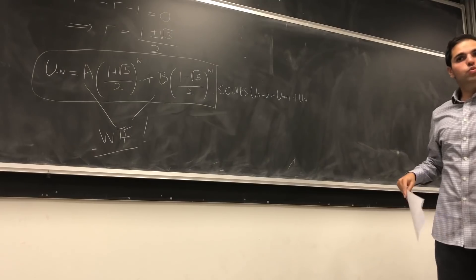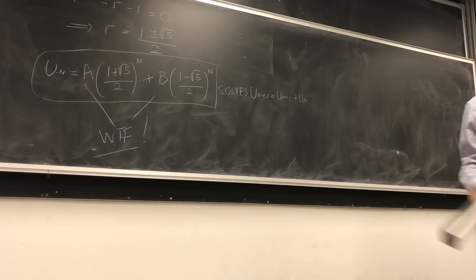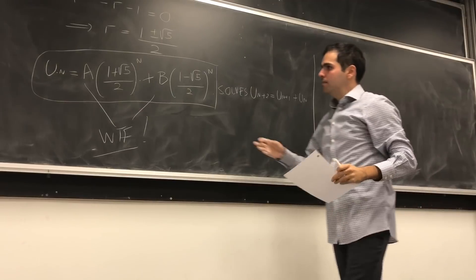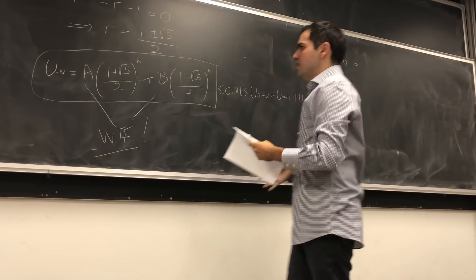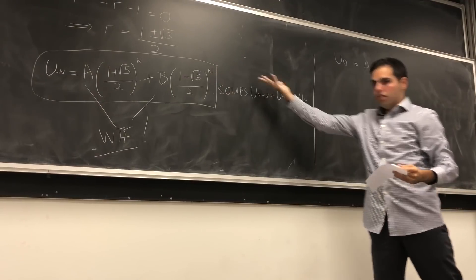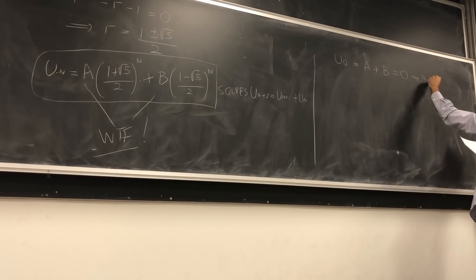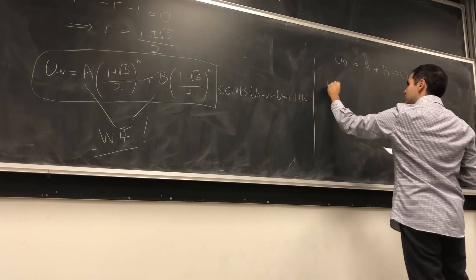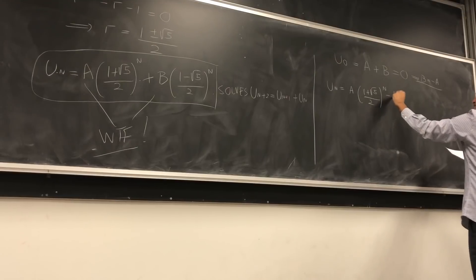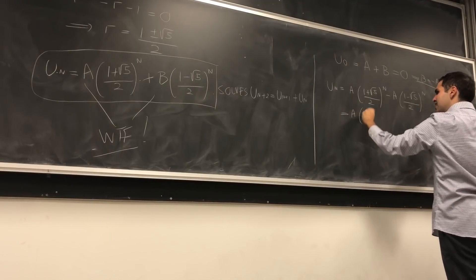To find a and b, let's use the initial conditions u_0 equals 0 and u_1 equals 1. So u_0 in terms of the formula is a times (golden ratio) to the 0 — which is a times 1 — plus b times (the other root) to the 0, which is also 1. We get a plus b equals 0, so b equals minus a. Then u_n becomes a times ((1+√5)/2) to the n minus a times ((1−√5)/2) to the n, and we can factor out a.